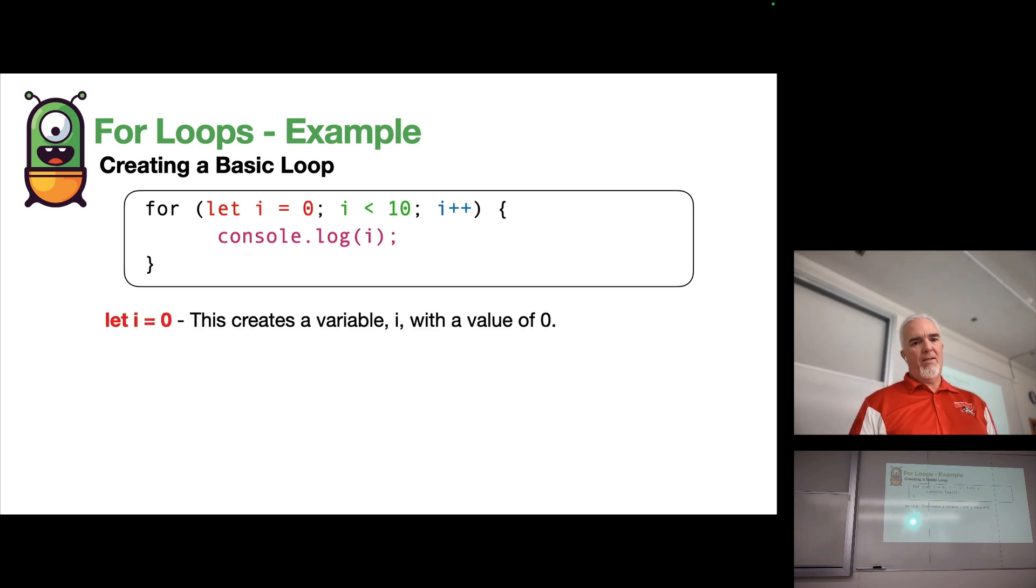Let i equals 0 creates a variable i with value 0. i is less than 10 is the condition, and it will continue the loop as long as i is less than 10.